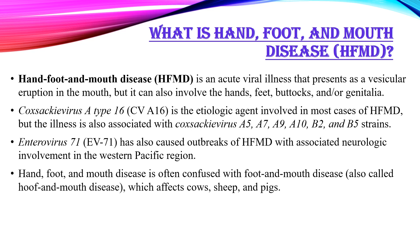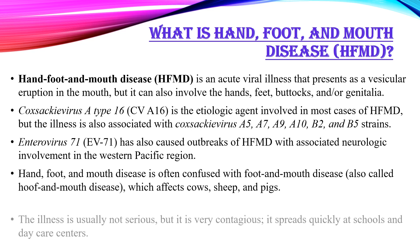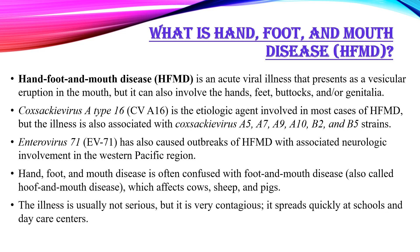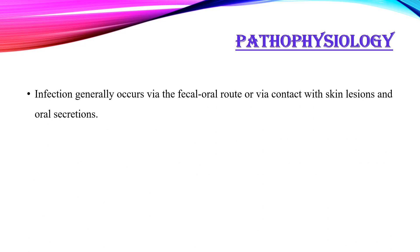Enterovirus 71 has also caused outbreaks of this disease with associated neurologic involvement in the western pacific region. HFMD is often confused with foot and mouth disease, which affects cows, sheep and pigs. The illness is usually not serious but it is very contagious, spreading quickly at schools and daycare centers.